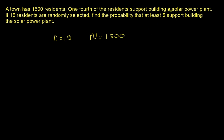There are two options: either you support the solar power plant or you don't. One-fourth of the people do support the power plant, so one-fourth of 1,500 is 375 supporters.